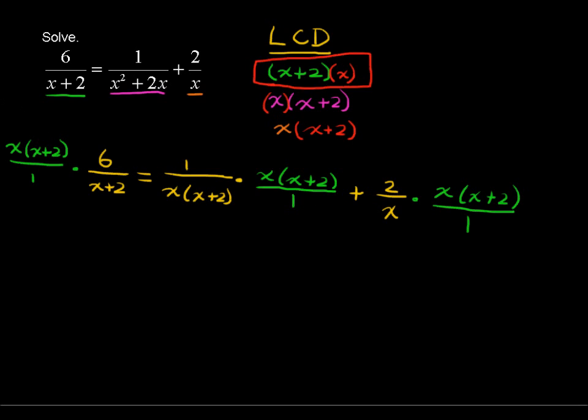Now we can see why we did this. The reason you multiply through by the lowest common denominator is that every single denominator is going to cancel out. We've got an x plus 2 cancels with this x plus 2, and this x and this x cancels, and this x plus 2 and x plus 2 cancels. And over here we have these rational expressions being multiplied and we can cancel an x from the numerator and denominator.